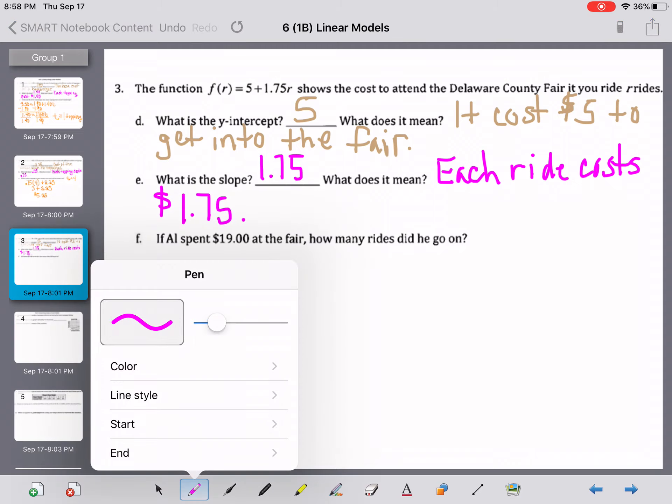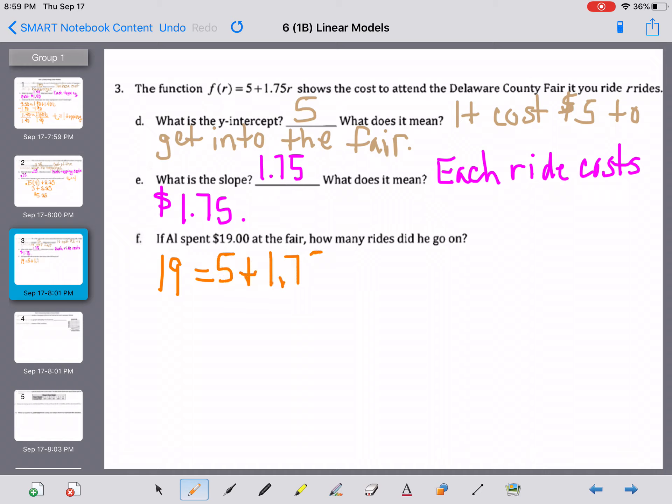And finally here, for this video, if Al spent $19 at the fair, how many rides did he go on? On these types of questions, we need to make sure that we're putting in the value where it needs to go. R stands for ride, so we're not putting the $19 in for that. We're putting the $19 in place of the f(r), f of r. It's the function based on rides is what that really stands for. Equals 5 + 1.75r. And then we have to solve this equation.